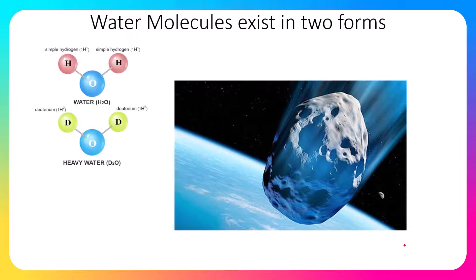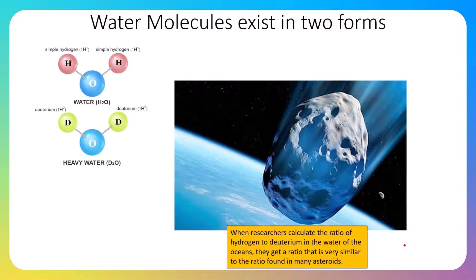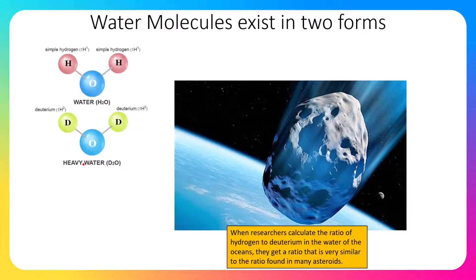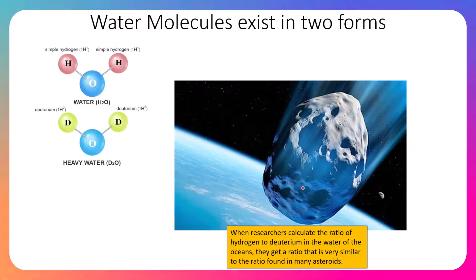That brings in our asteroid hypothesis. When researchers calculate the ratio of hydrogen to deuterium in the water of the oceans, they get a ratio very similar to the ratio found in many asteroids. When they sample water on these asteroids — which are obviously not from Earth — they find a mixture of both normal water and heavy water. All of our bodies of water on Earth contain a ratio of these two types as well, which strengthens the hypothesis that water on Earth originated from outside Earth and was probably brought here by an asteroid.